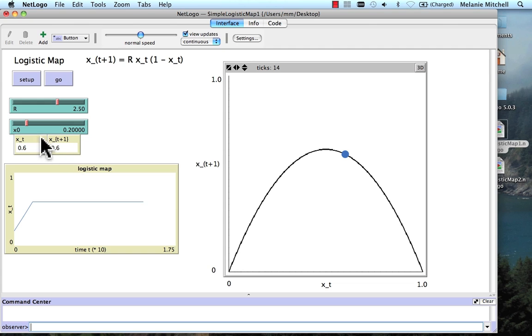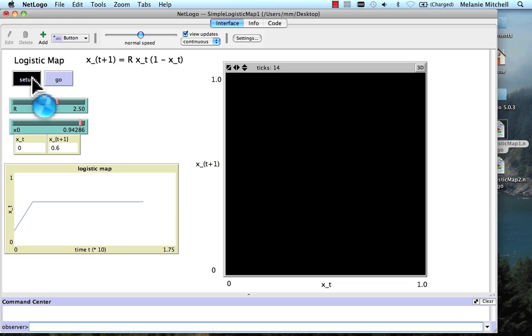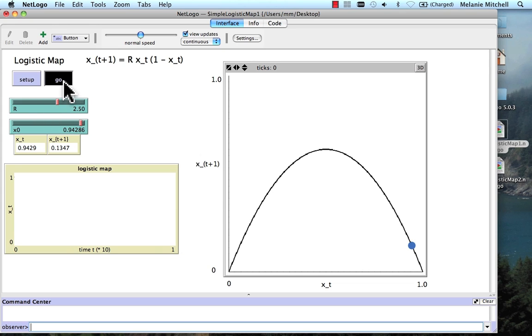And if I change the x0 again, let's make it 0.9 something, do setup, let's see what happens. Again, the system converges on 0.6, but it does it by a different trajectory, it gets there in a different way, it takes a little longer this time.